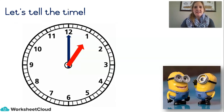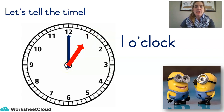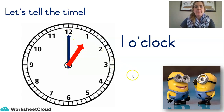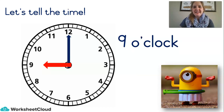Let's see if you remember how to tell the time. What time is it? 1 o'clock. Good. You can see the hour hand is pointing to the 1 — that tells us the hour is 1 o'clock. And the minute hand is pointing to the 12, so no minutes have gone by yet. The clock has just struck 1. We say it is exactly 1 o'clock. One more — what time is it now? 9 o'clock.